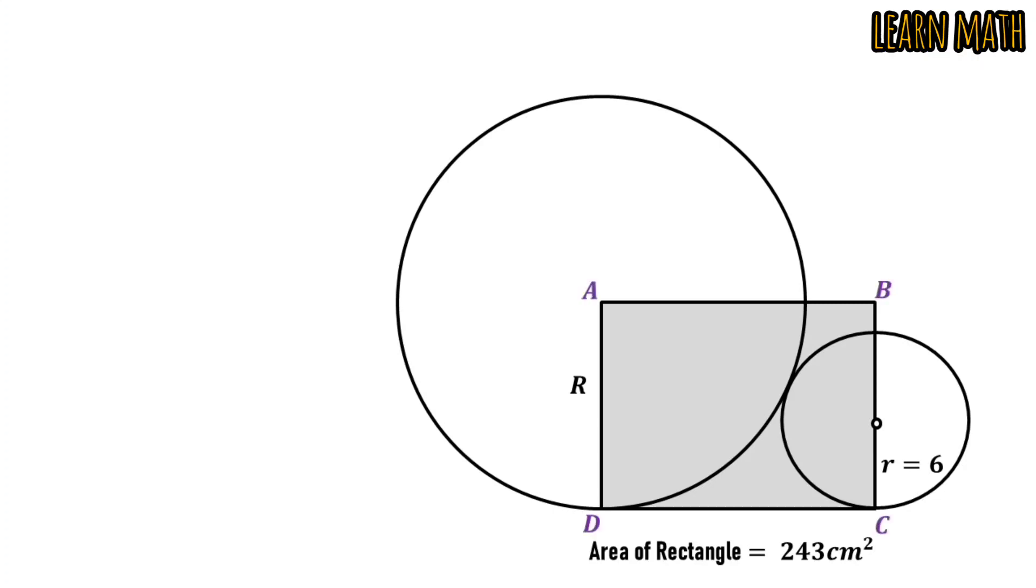Let's denote the vertices of the rectangle by A, B, C and D. And E is the center of the small circle. The radius of the big circle is R and the radius of the small circle is denoted by small r.